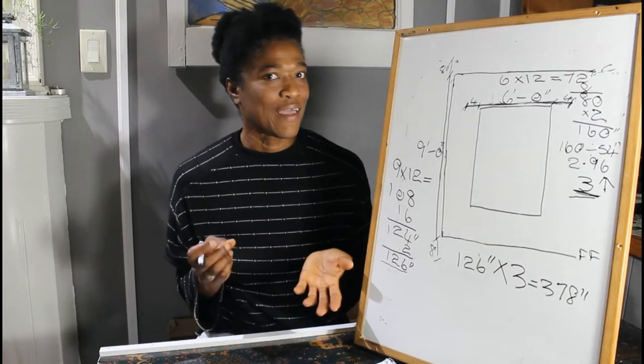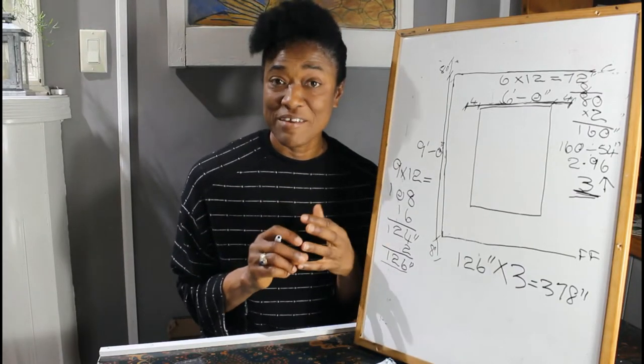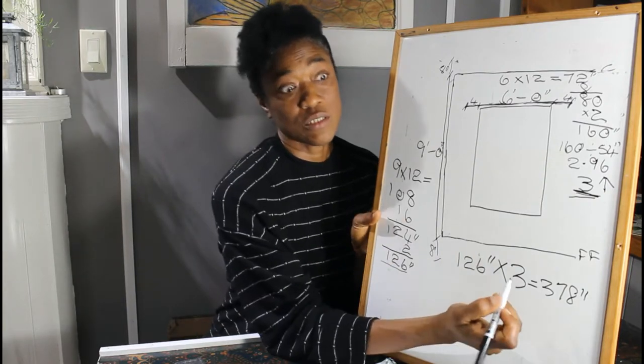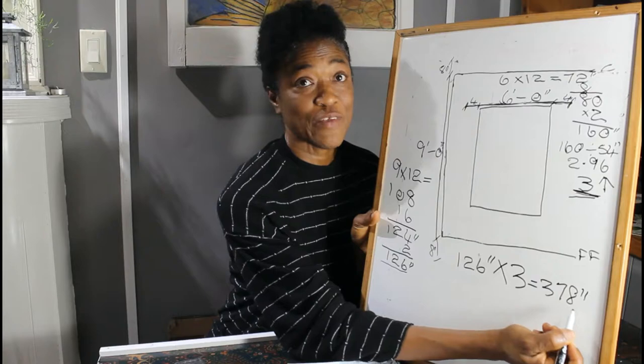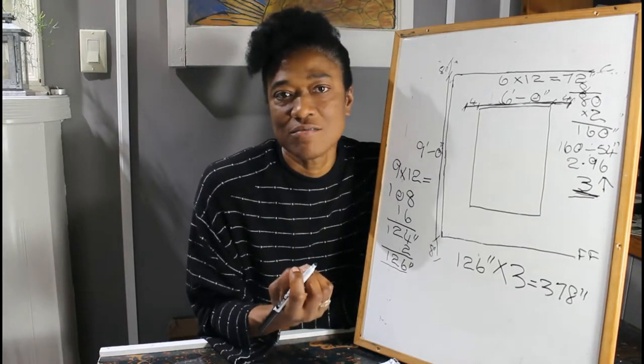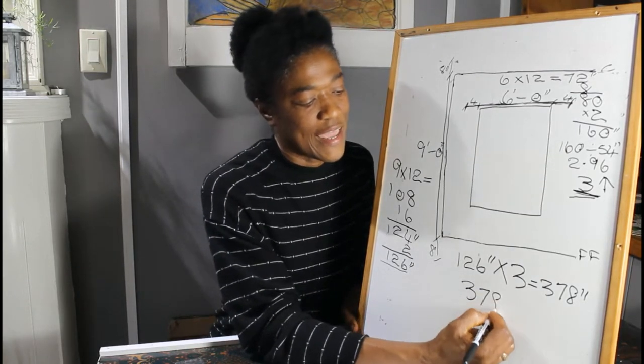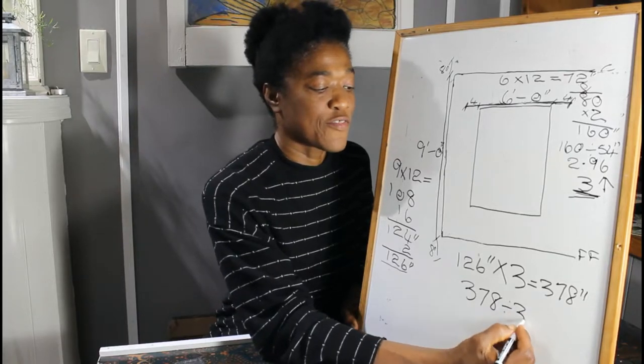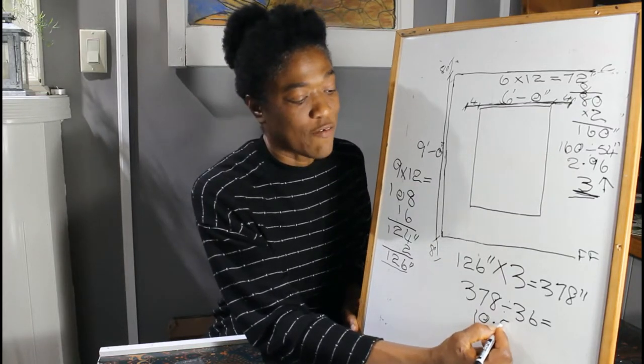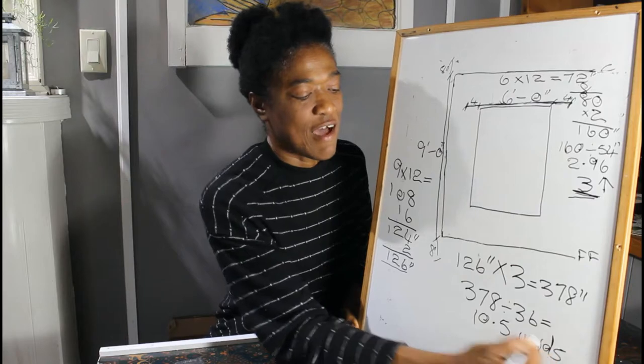However, we don't buy fabric in inches, we buy fabric in either yards or meters. Here we're working with feet and inches, so we're going to divide the 378 by 36 inches. Because there are three feet, 12 inches in a foot, three feet in a yard. So that's 378 inches divided by 36 inches. And that will give us 10.5. So we will need 10.5 yards of fabric.